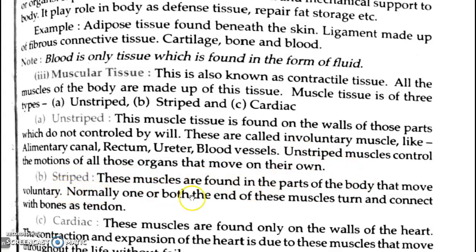Striated muscles are found in the parts of the body that move voluntarily. You can move your legs and hands by your own will — these are called striated or stripped muscles. One or both ends of these muscles connect with bones via tendons.